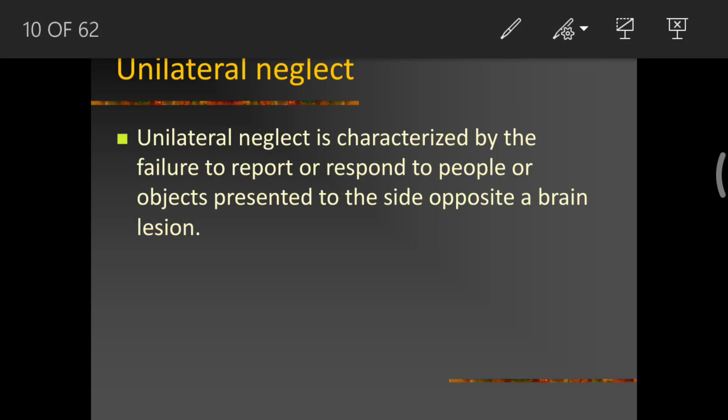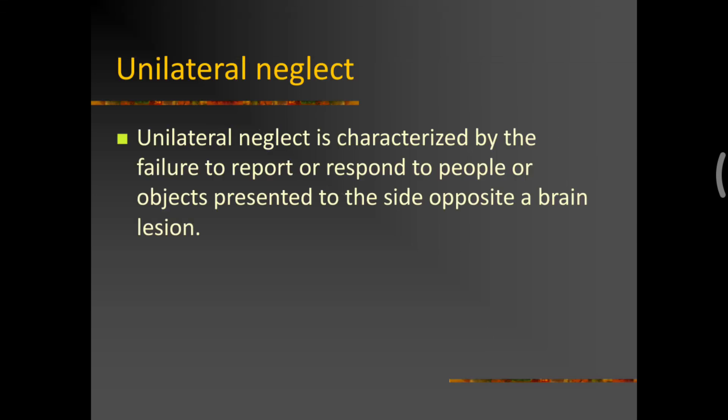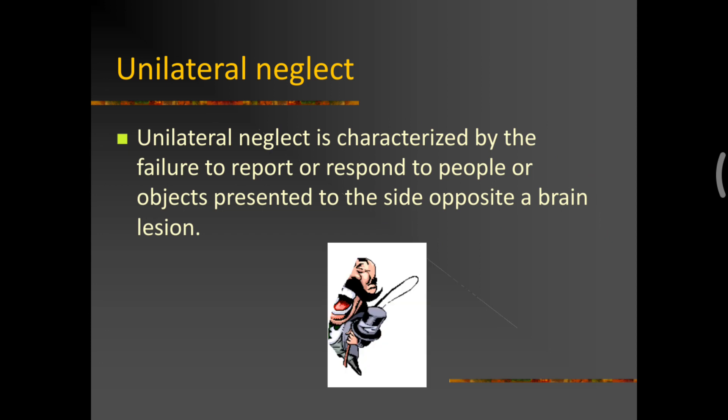The first type of problem in body image is called as unilateral neglect. Image and scheme are different. First, we will look into image disorder. So unilateral neglect. Unilateral neglect is characterized by failure to report or respond to people or objects presented to the side opposite to that of a brain lesion. So if a person is having a stroke, he might actually not be perceiving one half of his body.